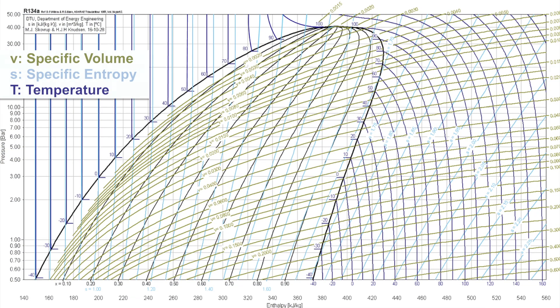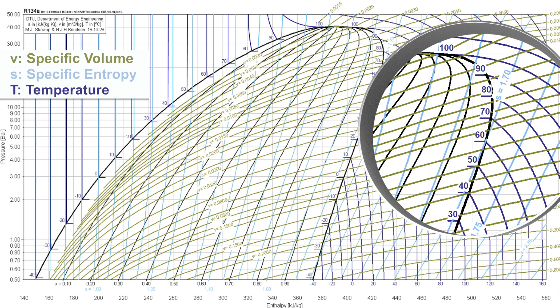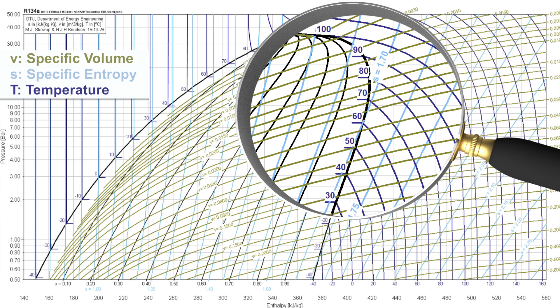We are now looking at the pressure enthalpy diagram of R134a, a widely used refrigerant. We can see that the plane contains many lines in different colors, which are arranged in a chaos at first sight. For experts, such a diagram is a map allowing them to see the behavior of a fluid at a glance. We are going to explain what these many lines actually mean.